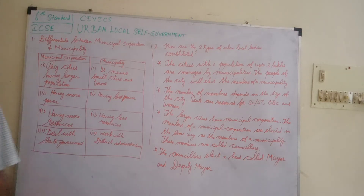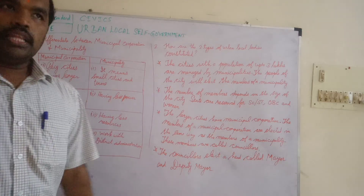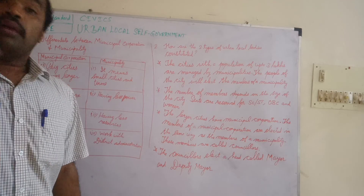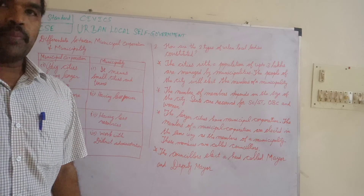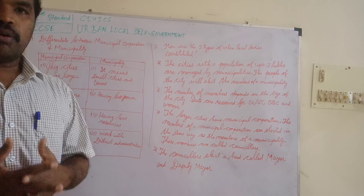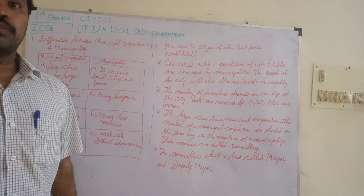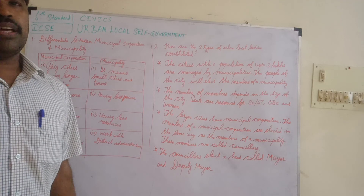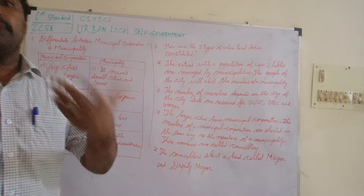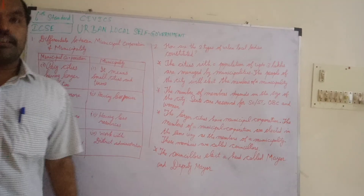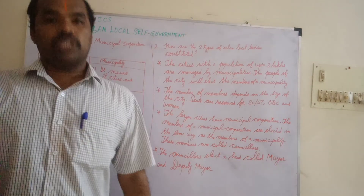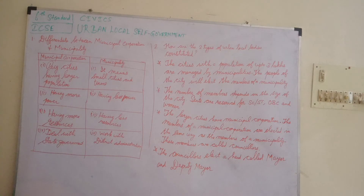These members are called councillors. In a municipal corporation, the head is the mayor and deputy mayor. They are elected through the councillors. This is what about the types of urban local bodies and how they are constituted.